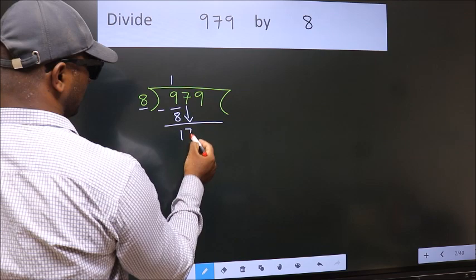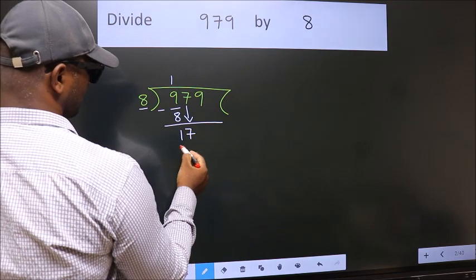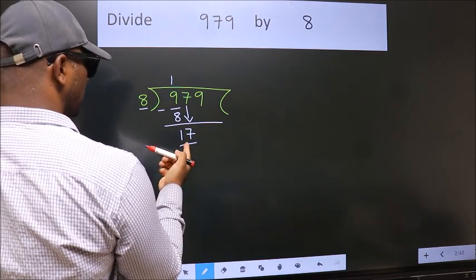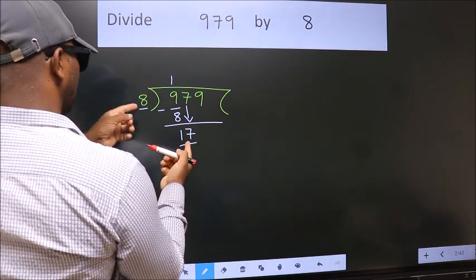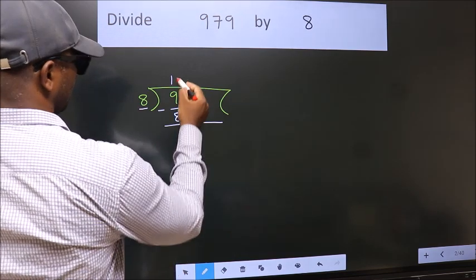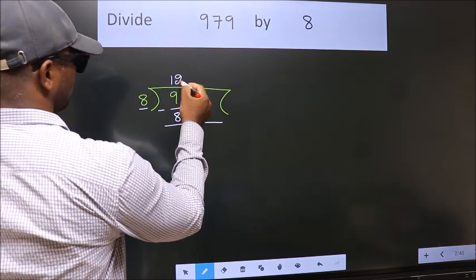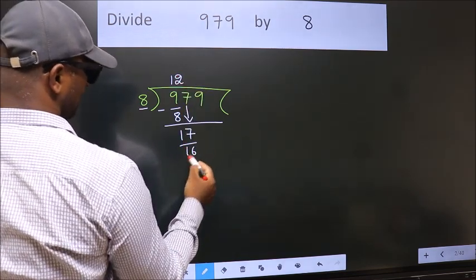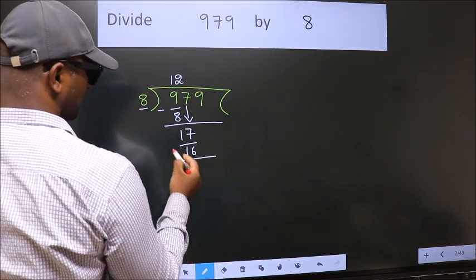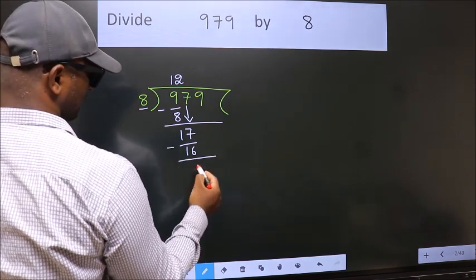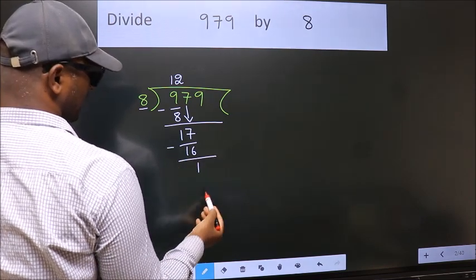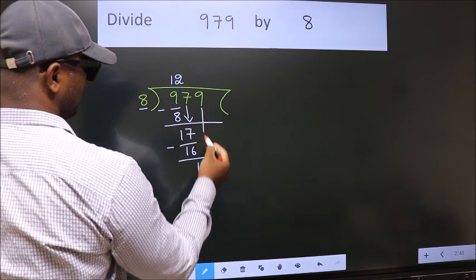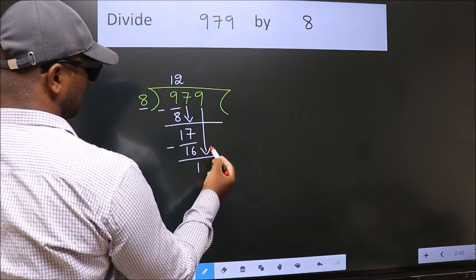So, 7 comes down, giving us 17. A number close to 17 in the 8 times table is 8 twos, which is 16. Now we subtract. We get 1. After this, bring down the beside number.